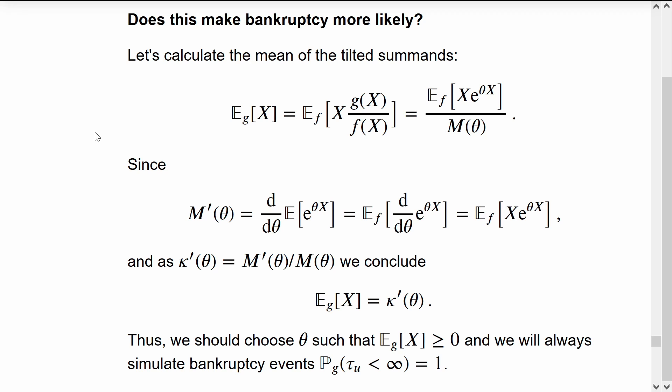The mean of X under G can be converted into a mean under F using this exact same change of measure that we've been using all through importance sampling. Although it might look a bit weird because every other time we've been moving from F to G, but to go from G back into F, it works in the same way.